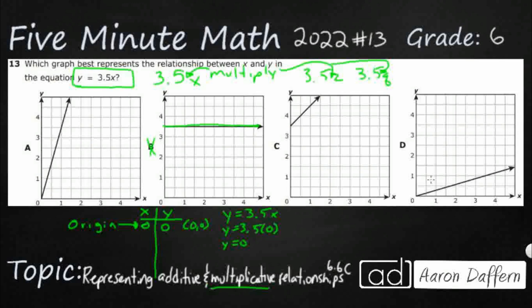And this starts up way too high. So that has a y-intercept of 3.5. And this is what we would call in later grades, direct variation, where it goes through the origin. It's proportional. And so it's either going to be A or D.